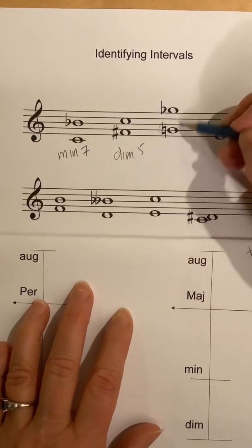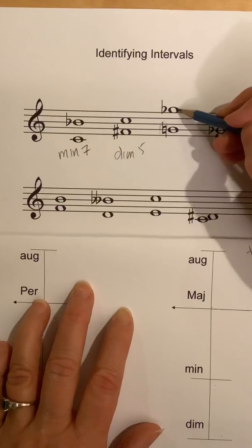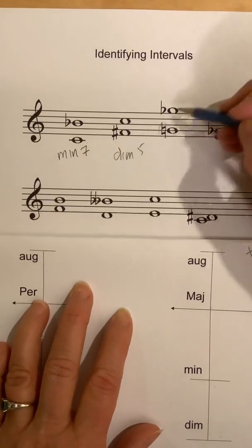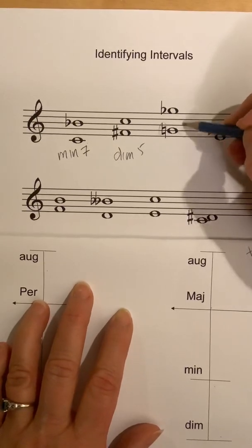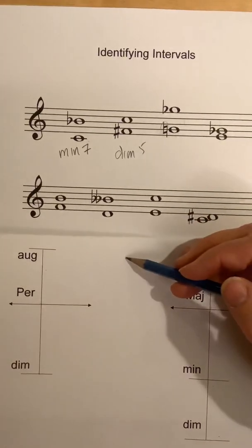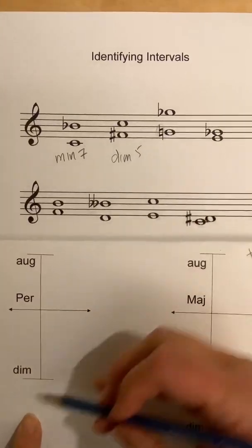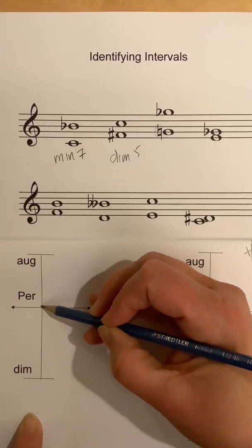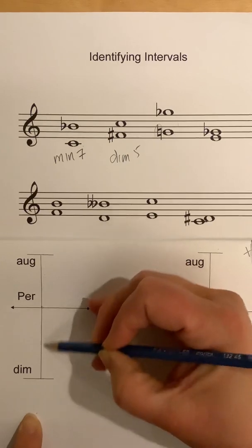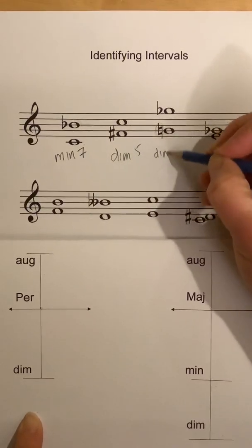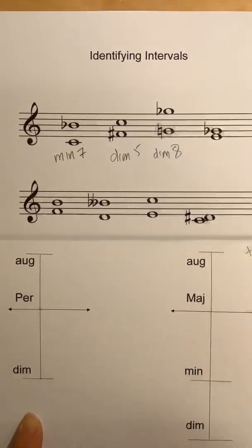G-natural to a G-flat. That's an eighth — G to a G is an octave. A G to a G should be your perfect octave. This is a G-flat, so it's a diminished octave — dim eight.